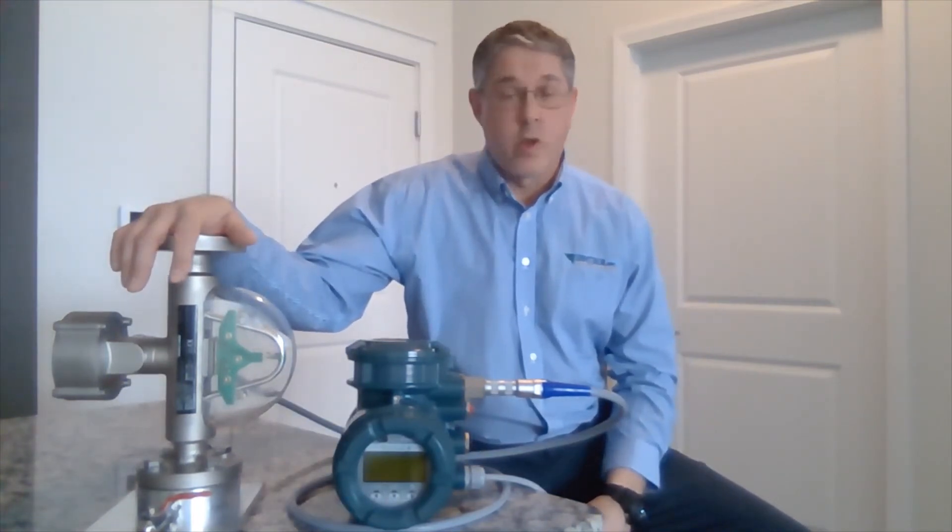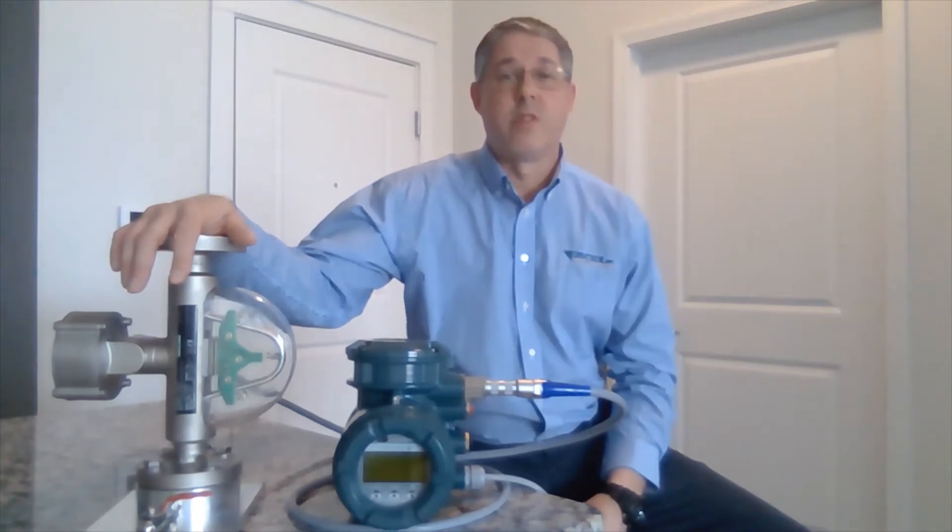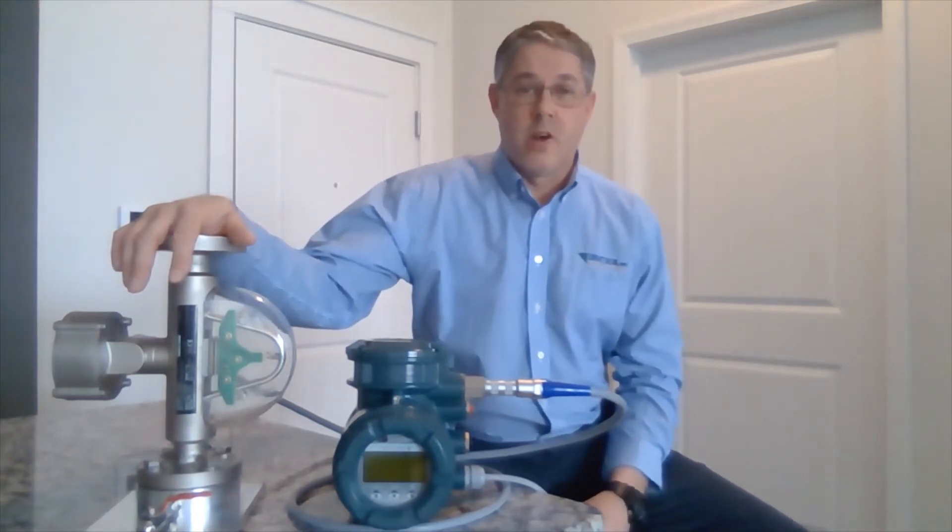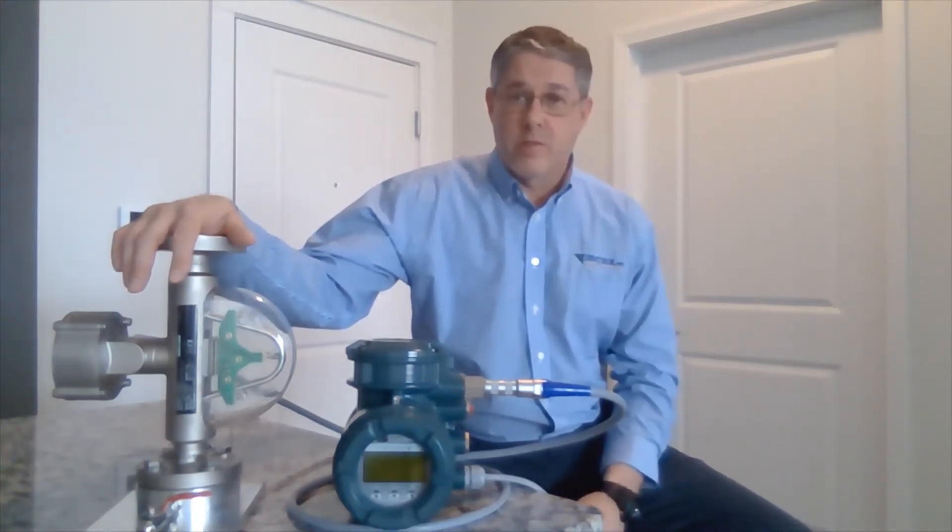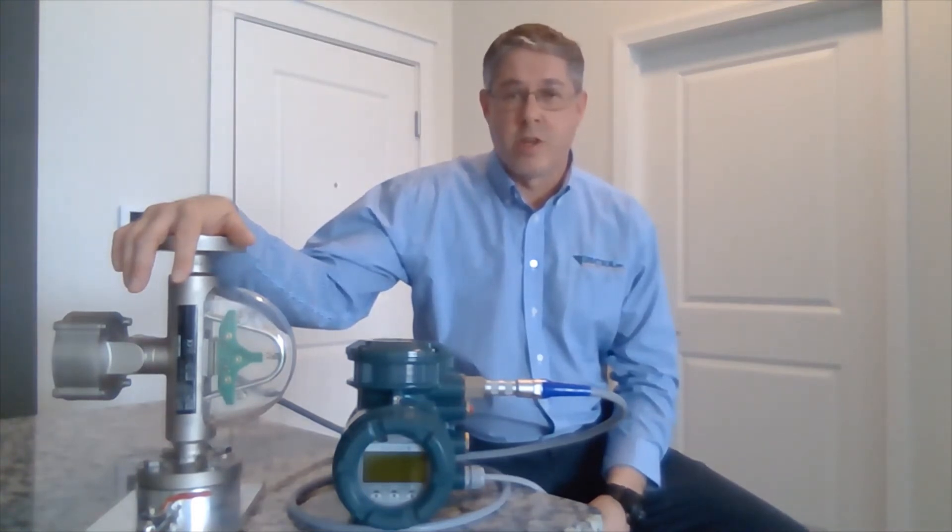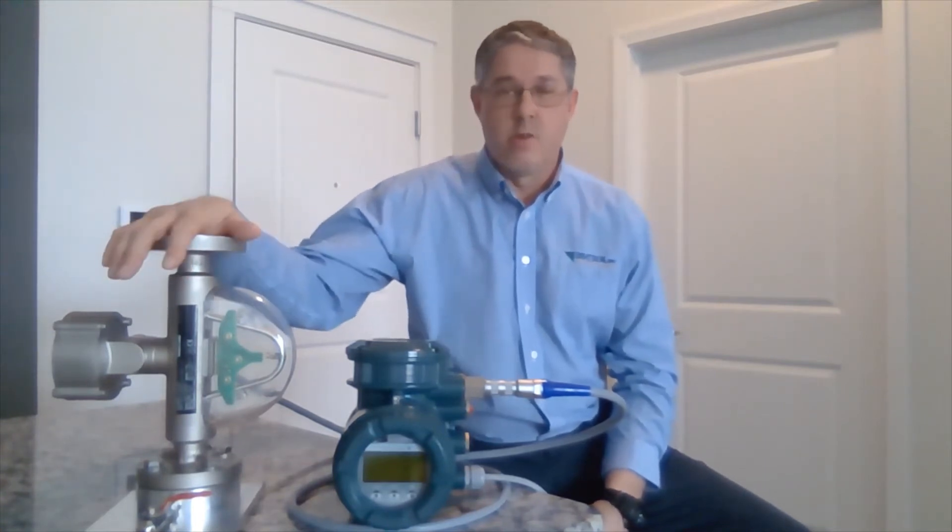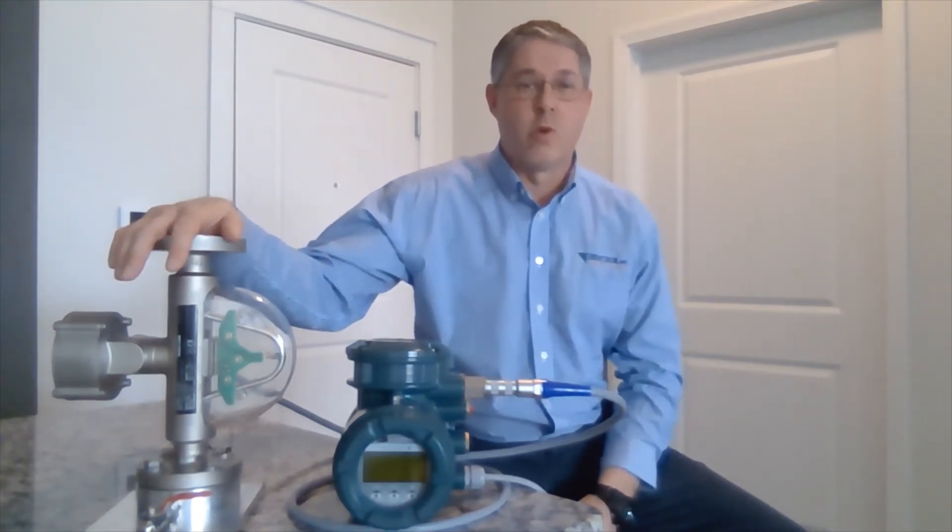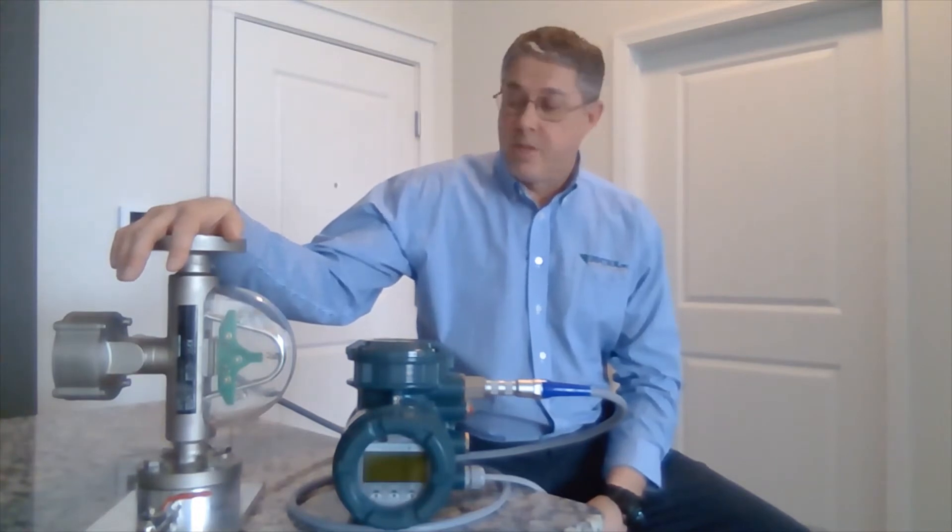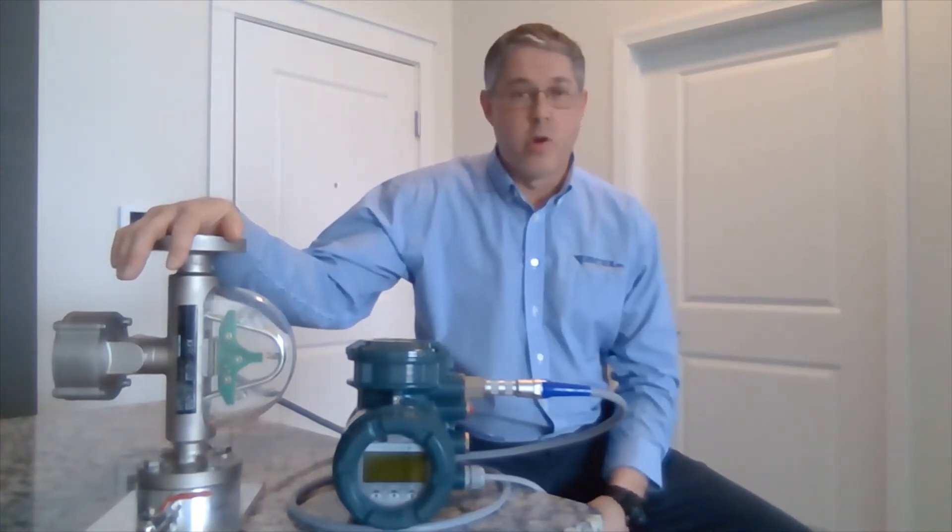There's no need for a flow conditioner before or after the metering point. There are no straight run requirements like there are in other technologies of flow measurement. You don't need 10 and 5, you don't need 20 and 10 - you need zero straight run requirements for a Coriolis meter. There's no moving parts in a Coriolis meter, which means less wear and tear, little to no maintenance on the meter.